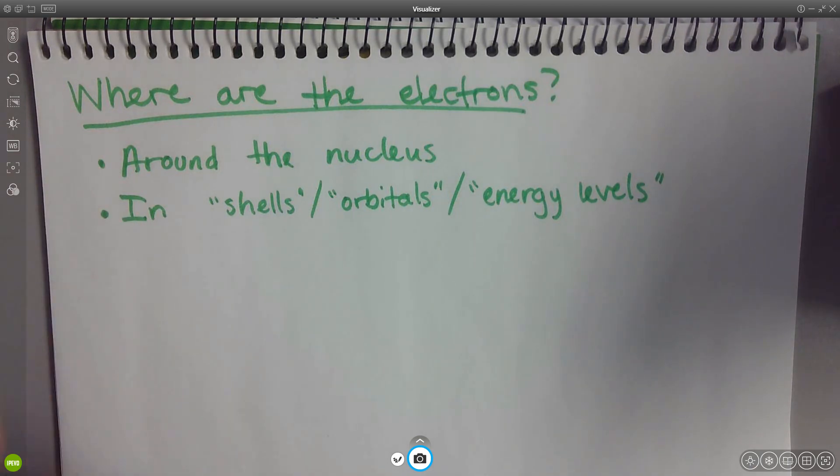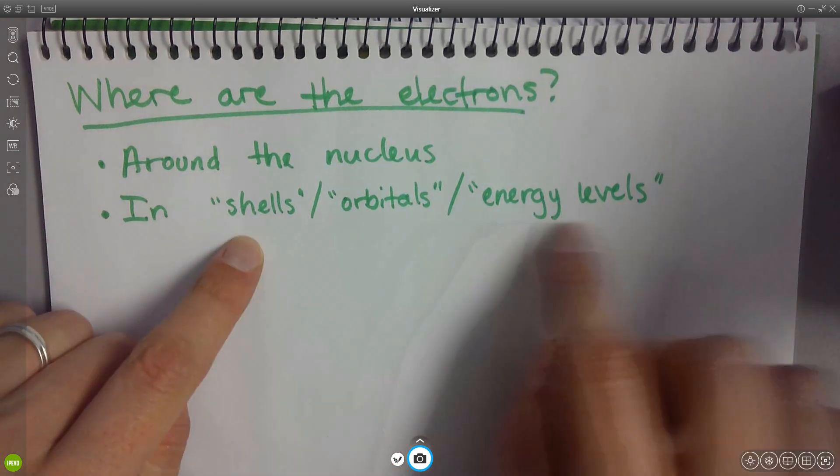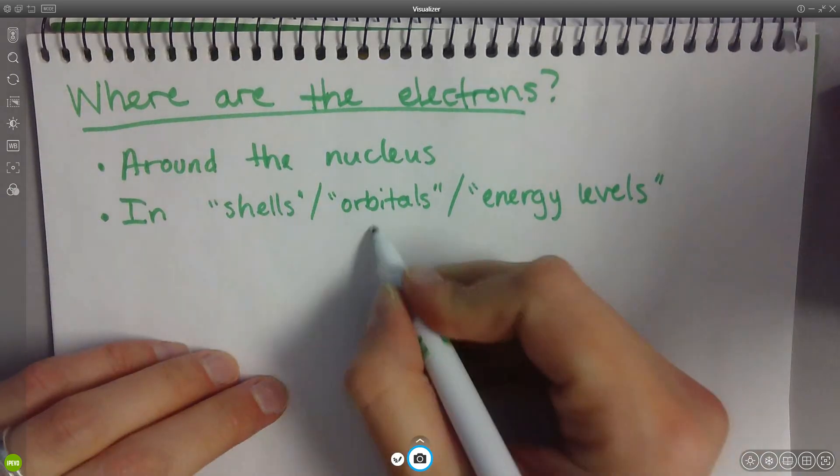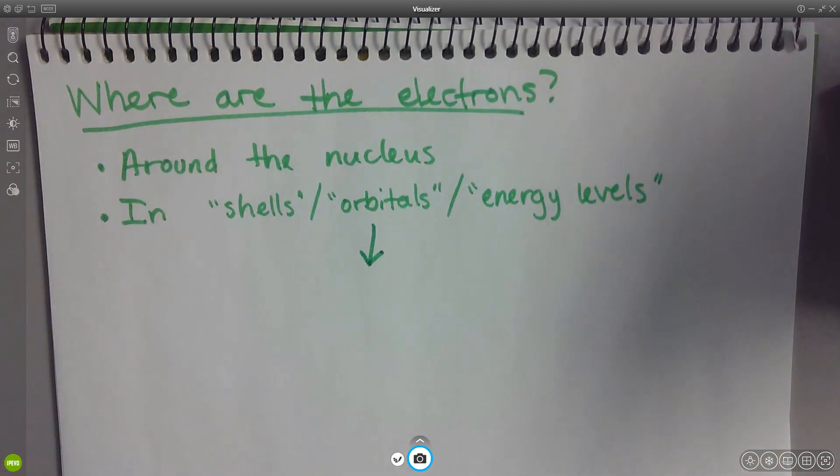So these three things are words that technically each have their own meaning, really, but we kind of often throw them around interchangeably a little bit just because their meanings are kind of similar. But really all of these are just terms for places where you find electrons around the nucleus. It gets way more complicated the more you think about it, but that's a good enough definition for us here in this class.